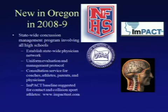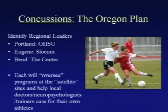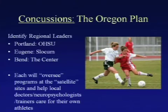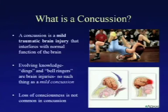OCAMP established a statewide network — a great combination of resources between the medical community and the high school sports community. The Oregon plan is focused around three regions: Portland, with regional consultation at OHSU; Eugene, with Slocum Orthopedics and Sports Medicine; and Bend. There are also some satellite locations, really trying to provide expertise to those in regions that may not have it in their local communities.